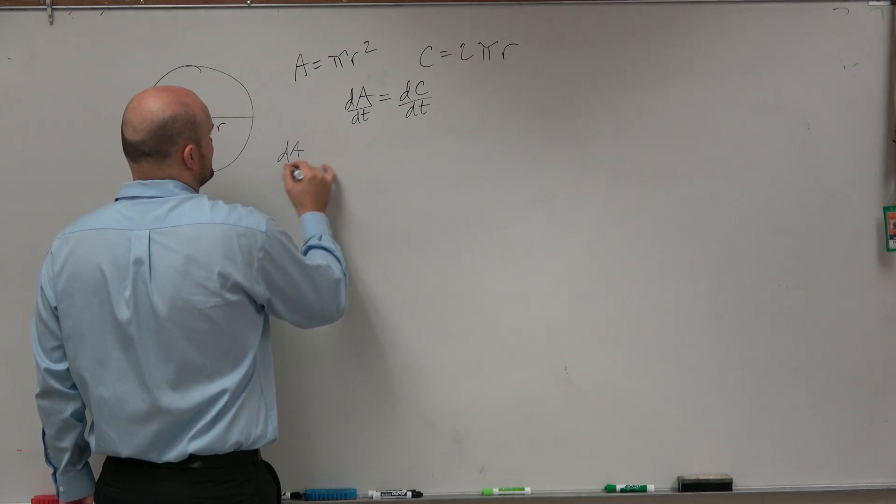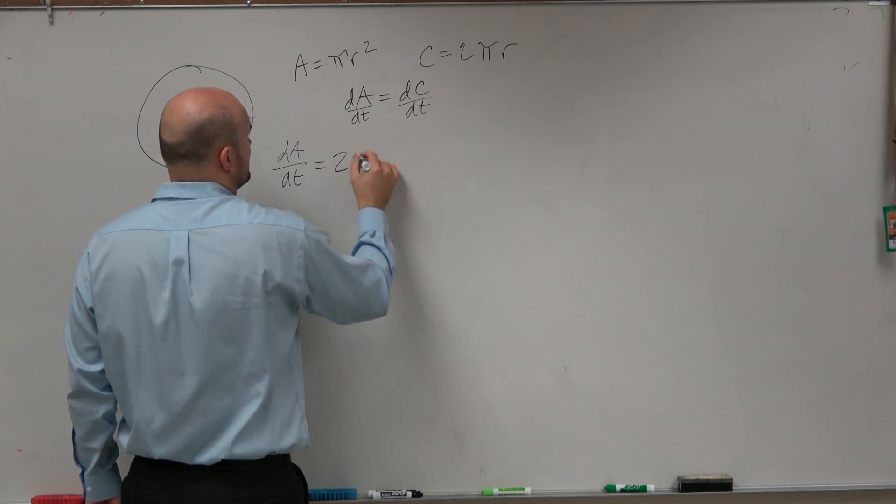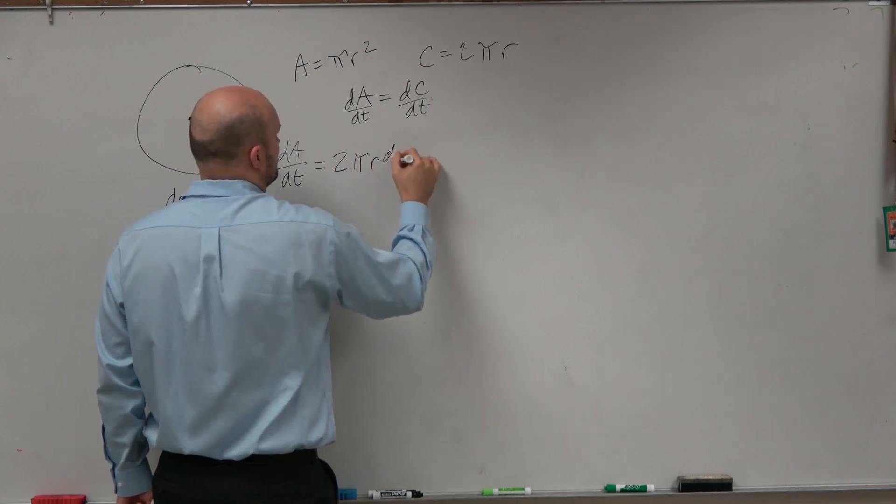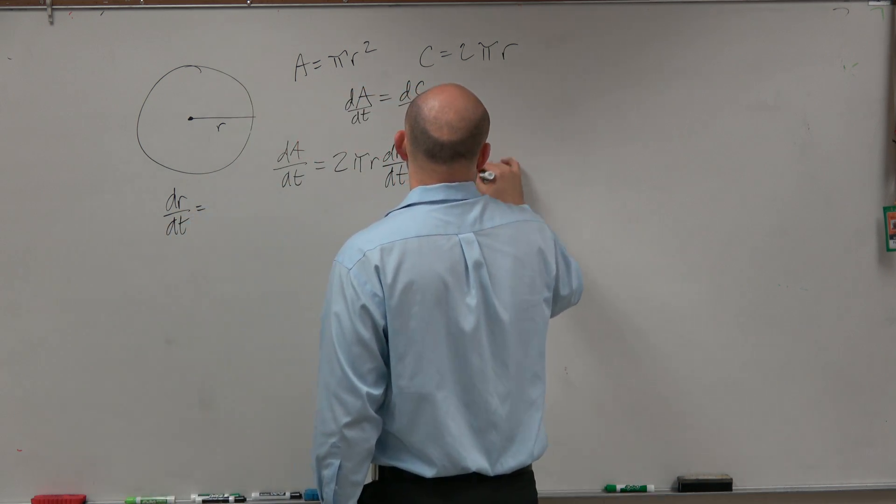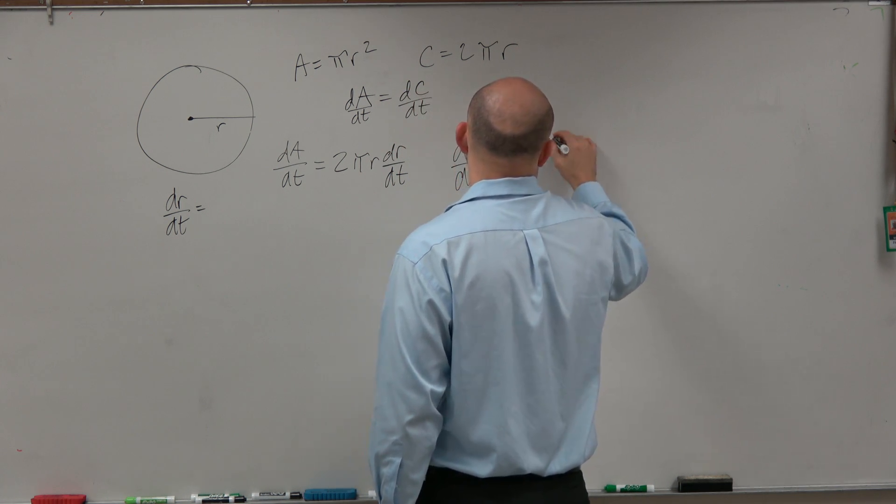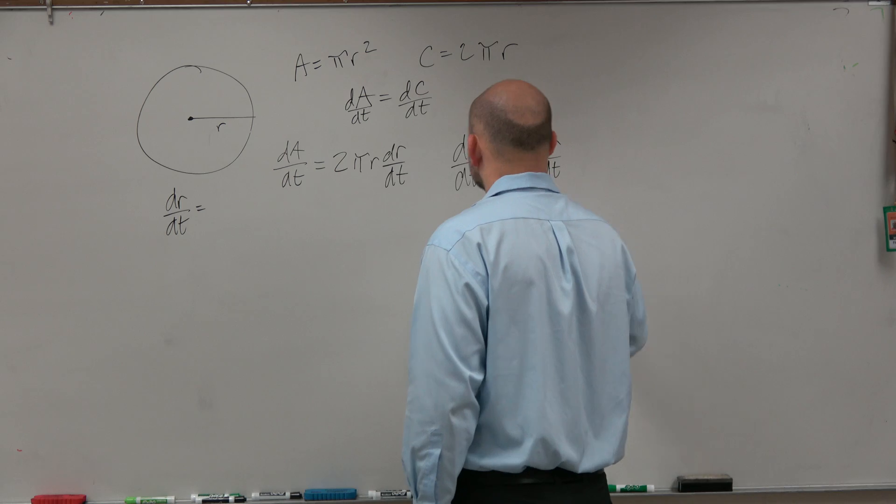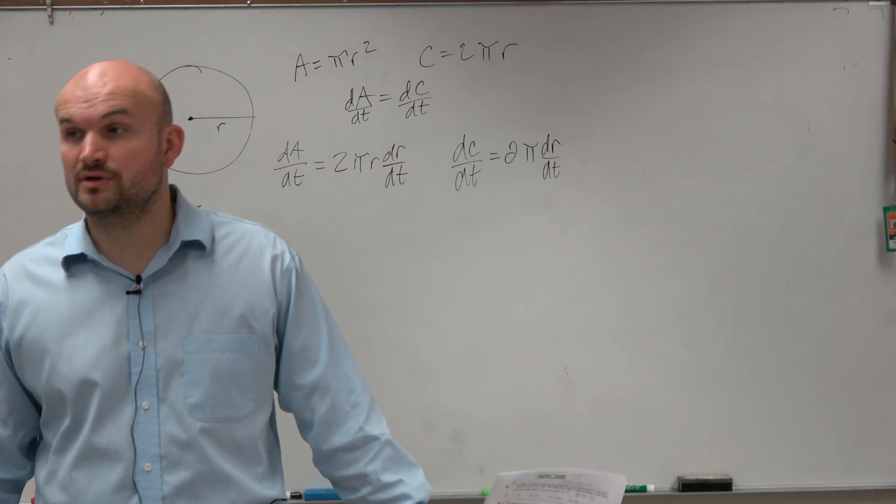So therefore, let's figure out what dA/dT is. In this example, that's just going to be 2 pi r dR/dT. And dC/dT equals 2 pi dR/dT. Would you guys agree with the work that I've done so far?